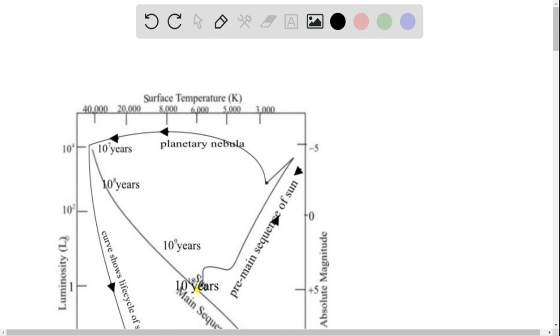And so the relationship between lifetime, we have lifetime here, it's going to be approximately the mass divided by luminosity. So that's luminosity and that length change.